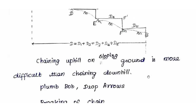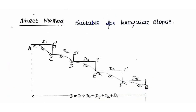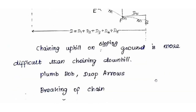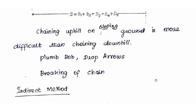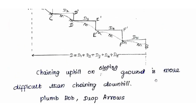Plumb bob or drop arrows are used to mark points at the lower level. We use drop arrows to transfer the ground point to the end of the tape or chain. This is called breaking of chain or tape.